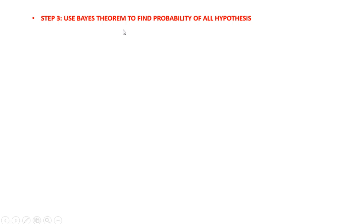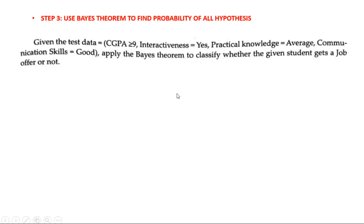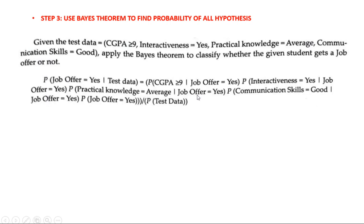Step 3: use the Bayes theorem to find the probability of all hypotheses. The question asks: classify whether the given student gets the job offer or not for this test data. The test data is: CGPA ≥ 9, interactiveness = yes, practical knowledge = average, communication skills = good. You have to tell whether the student will get a job offer or not.